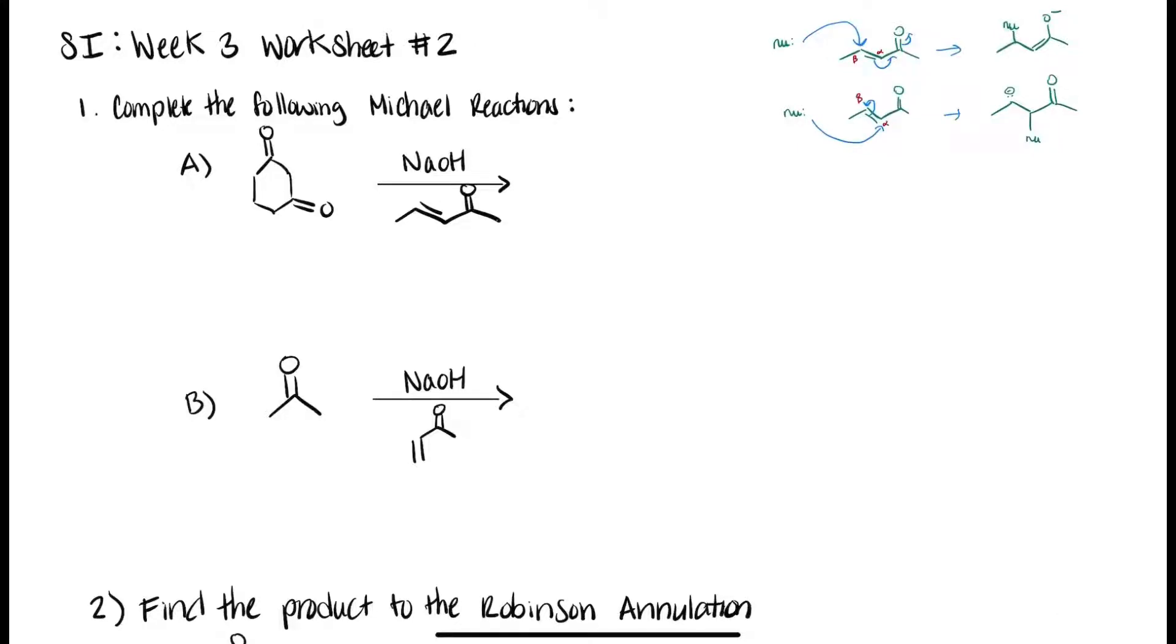Okay, so today we'll focus on Michael reactions. Whenever you see reagents that have alpha and beta conjugated ketones, aldehydes, or other electron withdrawing groups, we know that it is a strong indication that it's a Michael reaction.